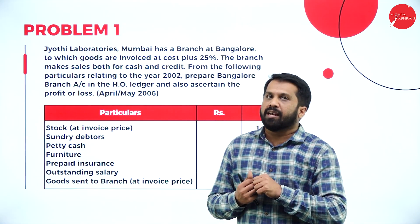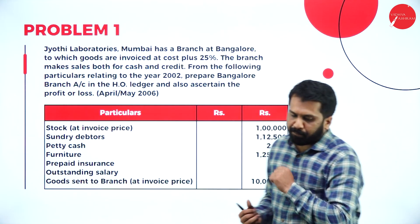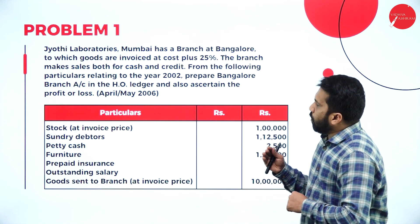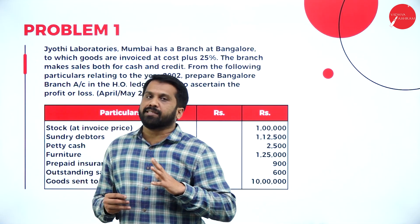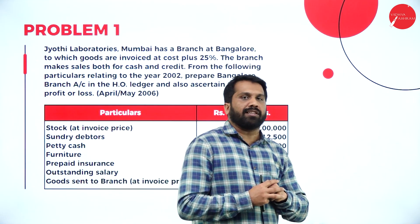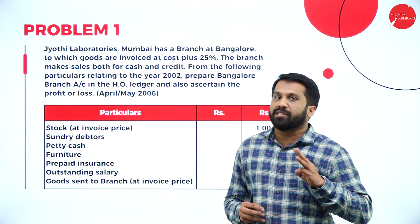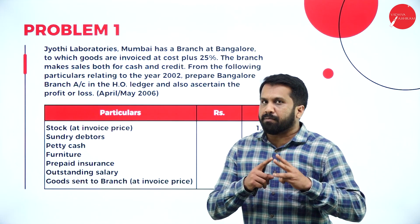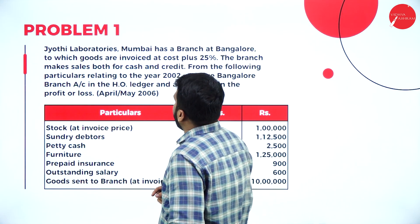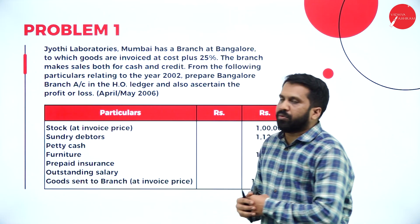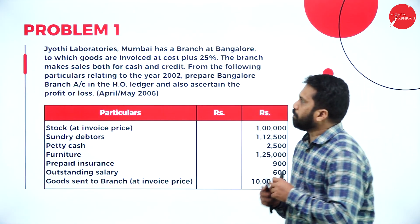In that branch, what sales happen and what purchases happen — normally everything is dependent on the branch, so there are no purchases; everything comes under sales only. In this, the branch stock account, branch debtors account, and branch petty cash account — all three come under branch account. We will go one by one and explain branch accounting with a small problem.